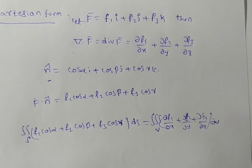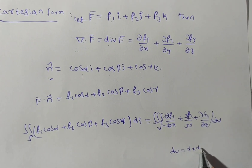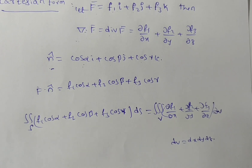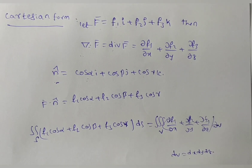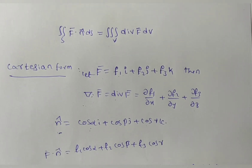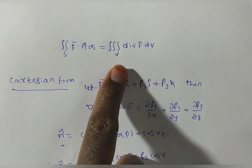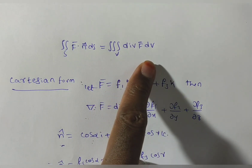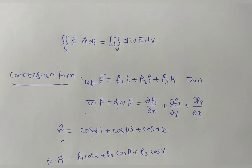In the exam, if they ask you to write the statement, no need to write the Cartesian form — only write the formula: integral over S of F-bar dot n-bar dS equals triple integral over V of div F-bar dV, along with the statement we already discussed. Thank you for watching this video.